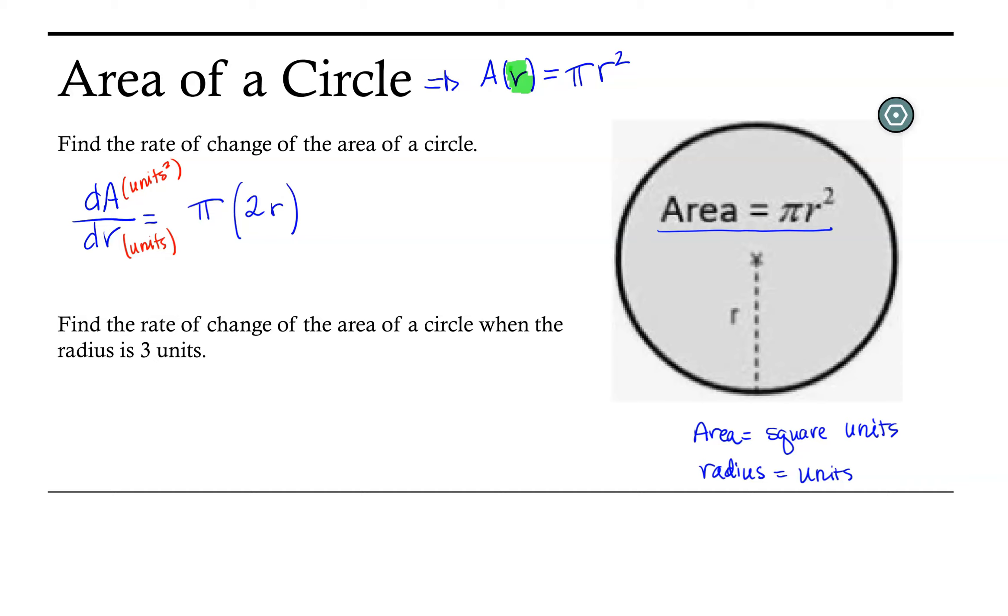Okay, so then let's find the rate of change of the area when the radius is 3 units.